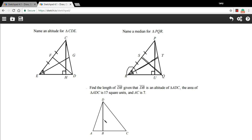It says, find the length of DB. So we want to find this length right here. Given that DB is an altitude of ADC, the area of triangle ADC is 17 square units, and AC is 7. So here, we actually have to use the formula for the area of a triangle.